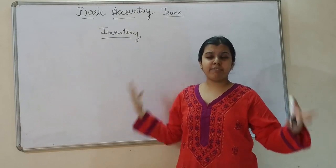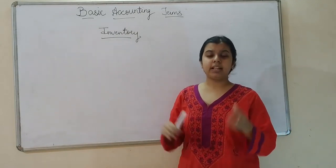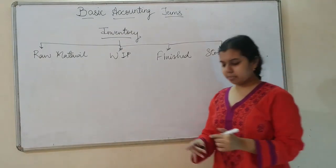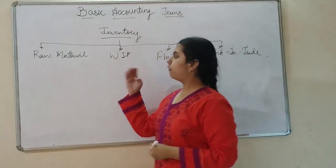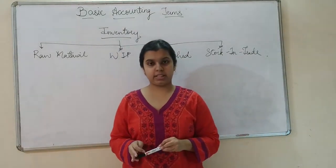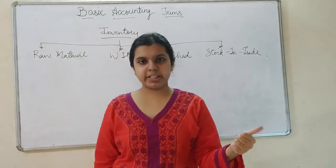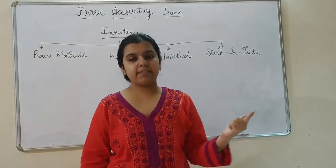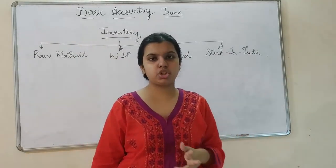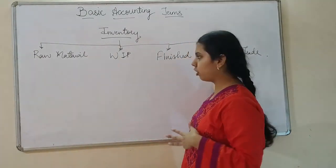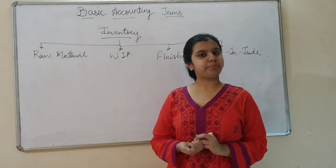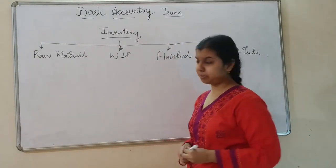There are many types of inventory. Let's see the types of inventory. Basically, we have four categories of inventory: Inventory of raw material, Inventory of work in progress (WIP), Inventory of finished goods, and Inventory of stock in trade.